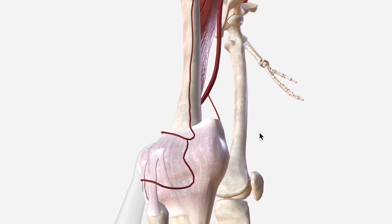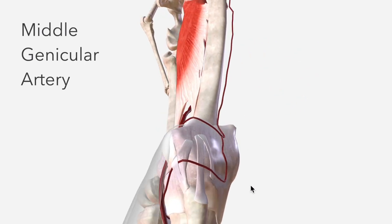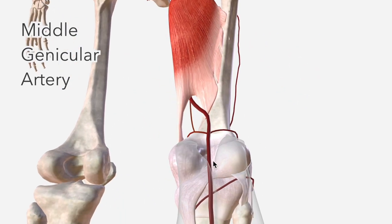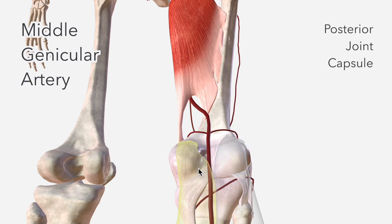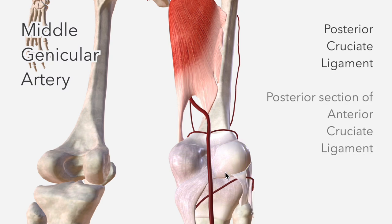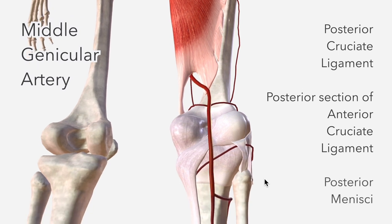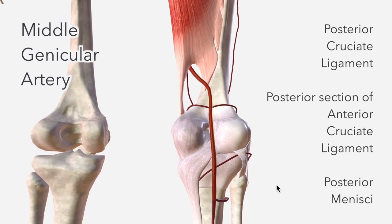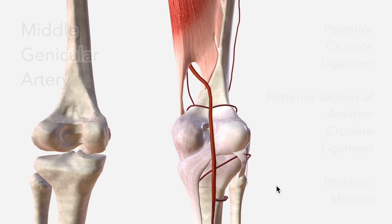We then have the middle genicular artery, which begins in the intercondylar fossa. It penetrates the posterior joint capsule and supplies the posterior cruciate ligament, or PCL, as well as the posterior section of the anterior cruciate ligament, or ACL, and the posterior menisci. We'll have a closer look at all of these in a second.